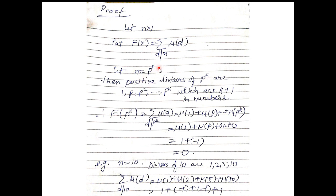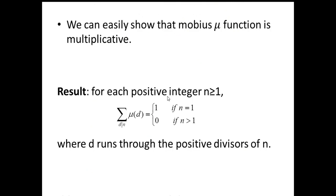The positive divisors of p^k are 1, p, p², …, p^k — that is k+1 divisors. Therefore F(p^k) = Σ μ(d) over divisors of p^k = μ(1) + μ(p) + μ(p²) + ··· + μ(p^k). Now μ(1) = 1, μ(p) = −1, μ(p²) = 0, μ(p³) = 0, and all higher terms are 0. So 1 + (−1) = 0, therefore F(p^k) = 0.